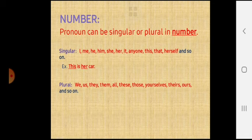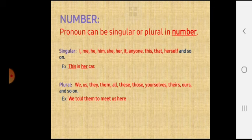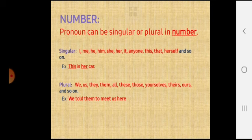Plural. Now plural number includes the words we, us, they, them, all, these, those, yourselves, theirs, ours and so on. For example, we told them to meet us here. In this sentence, we is a pronoun word used for more than one person and them is also used for more than one person. This is the example of plural pronoun.